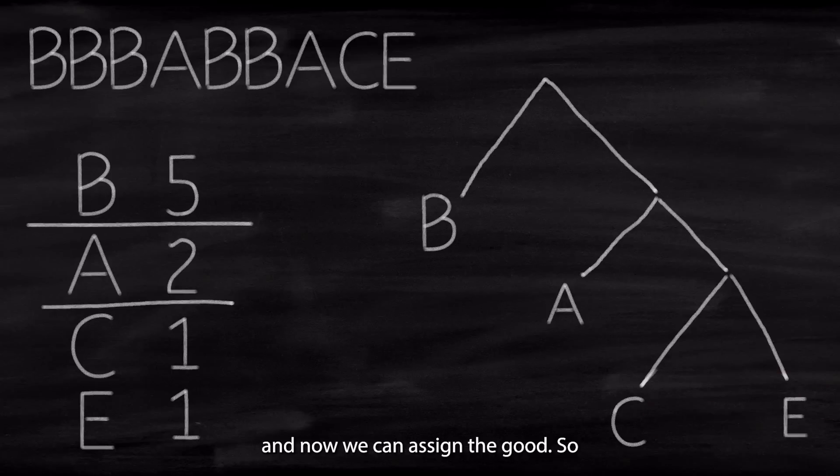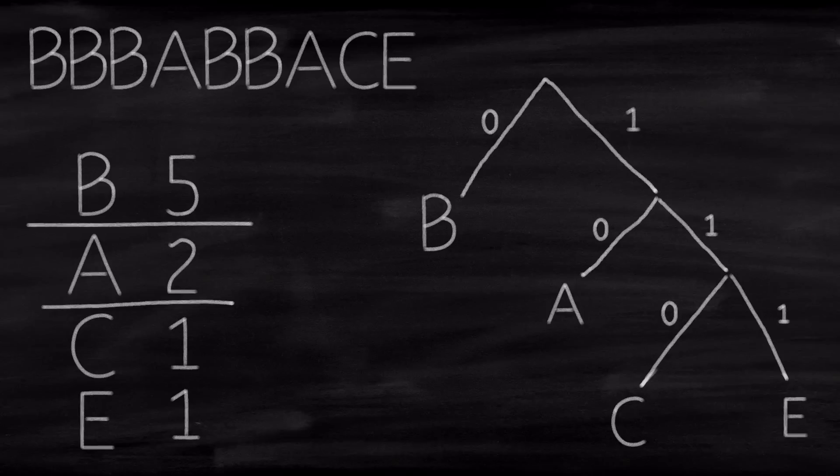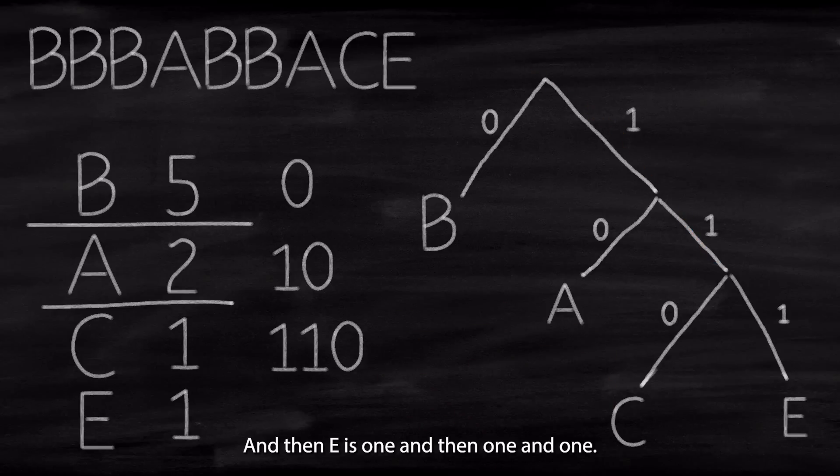And now we can assign the codes. So left is 0, right is 1. Left is 0, right is 1. Left is 0, right is 1. And then the codes would be, so to arrive at B, we have to go through 0. So B is only 0. Here, A is 1 and then 0. So 1, 0. C is 1 and then 1 and then 0. So 1, 1, 0. And then E is 1 and 1 and 1. So that's 1, 1, 1. And that's it.